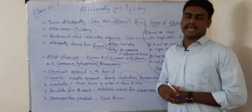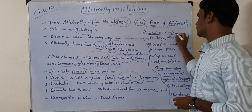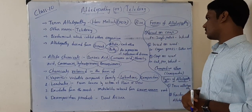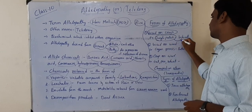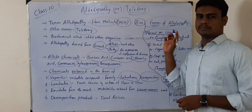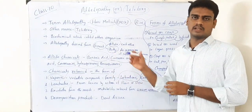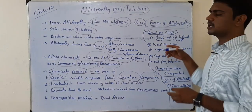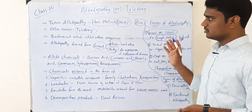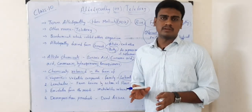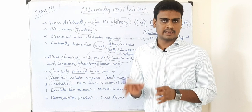Now let us see the forms of allelopathy in weed management. The first form is weed on crop. The example is jungli palak weed affecting the wheat crop — jungli palak releases allelochemicals that affect the wheat plant, either suppressing, inhibiting, or killing it. Note that allelochemicals do not always kill; they may only suppress or inhibit growth.